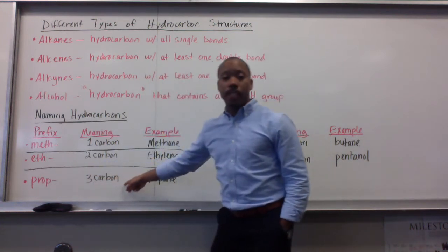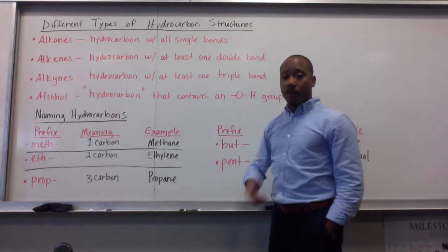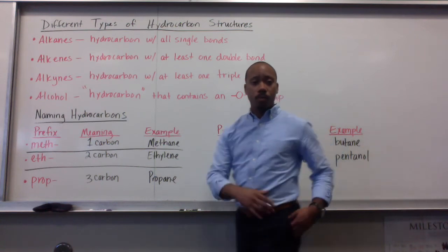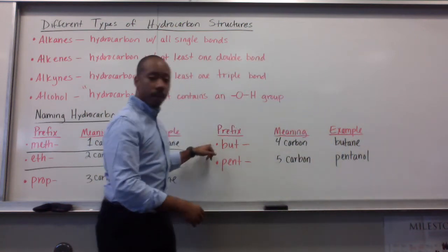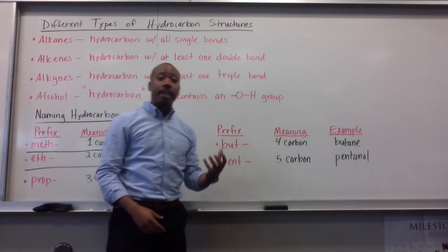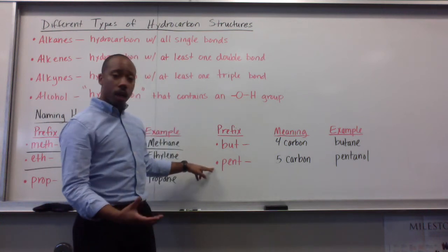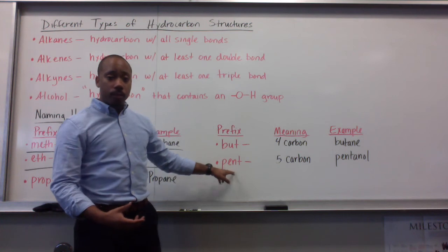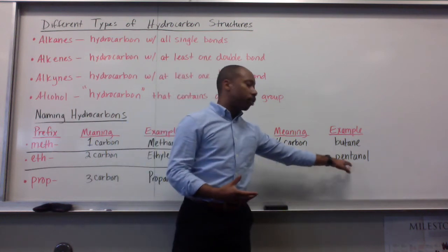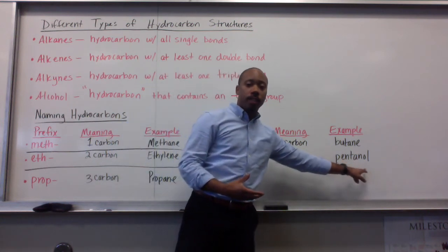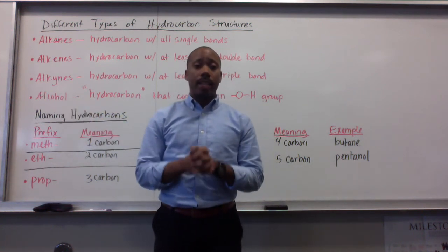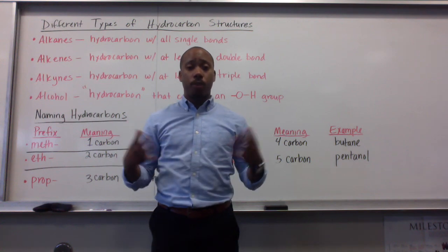Prop has three carbons in its structure — an example would be propane, the gas used in a barbecue gas grill. The next prefix is but, meaning four carbons — an example would be butane, which is the fuel in a lighter. The last prefix we'll talk about is pent, which refers to five carbons in your structure — an example would be pentanol, where the '-ol' ending references it being an alcohol. Take notes on this and we'll do more examples and problems based on hydrocarbons in class.